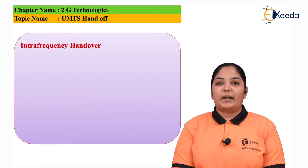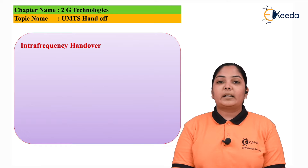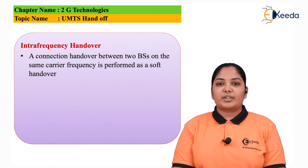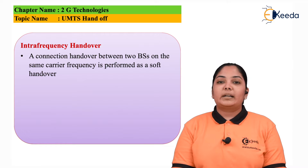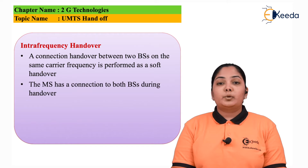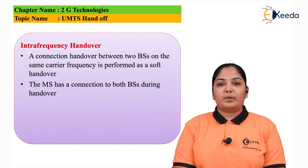There are two types of handoff. The first is called intrafrequency handoff and the other is called interfrequency handoff. Intrafrequency means handing off the cell phone connection to the same frequency but a different base station. A connection handover between two base stations on the same carrier frequency is performed as soft handoff. The mobile station has a connection to both base stations during this type of handoff.